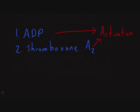ADP is released when dense granules are activated and release their substances. But thromboxane A2 is synthesized afresh when platelets are activated. Both of these are very important for the positive feedback effects that they have.